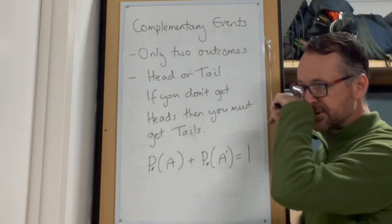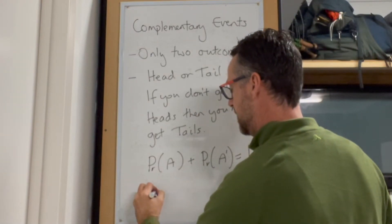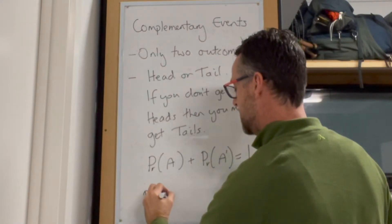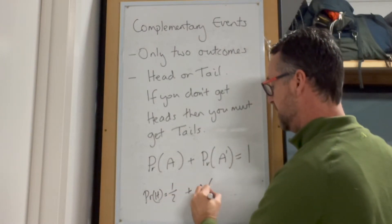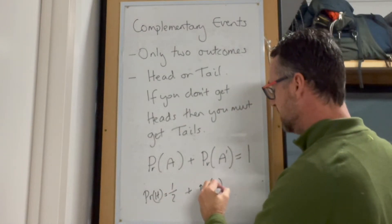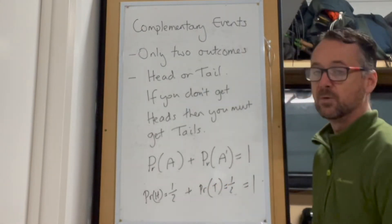So for example, the probability of us tossing a head is going to be one half, and if we add on that the probability of the reverse of that, which is obviously a tail, that's going to equal one half as well. So one half and one half add up to equal one.